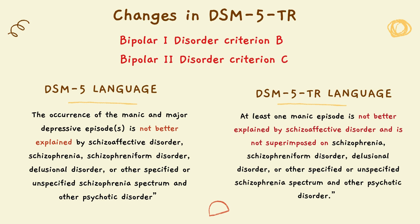Regarding changes made to the DSM-5-TR: Criteria B for Bipolar 1 and Criteria C for Bipolar 2 have changed with a slight update in language. Previously in DSM-5 it read 'not better explained by schizoaffective disorder.' It now reads 'not better explained by schizoaffective disorder and is not superimposed on schizophrenia.' This change was made to improve clarity of language.